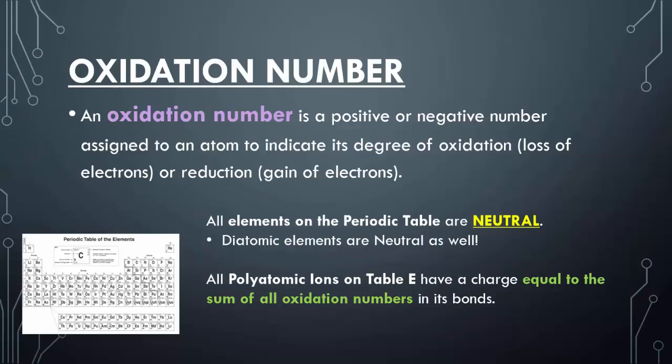All elements on our periodic table are neutral. They are always, always neutral unless they are bonded with other elements. Diatomics, however, are also considered neutral. Remember, diatomics are classified as elements, and all elements are neutral.